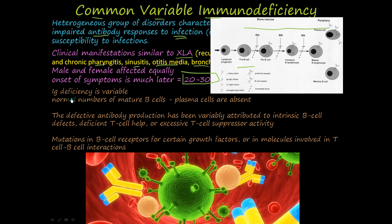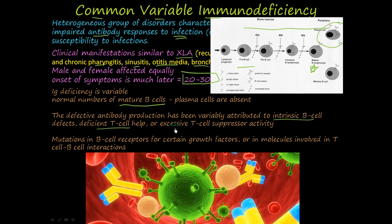The Ig deficiency is variable. Normal numbers of mature B cells are present — those counts are normal. The problem is that plasma cells are absent. There's a problem with mature B cells switching over to plasma cells, differentiating and secreting antibodies. The defective antibody production has been variably attributed to intrinsic B cell defects, deficient T cell help, or excessive T cell suppressor activity, as well as mutations in B cell receptors for certain growth factors or in molecules involved in T cell–B cell interactions.